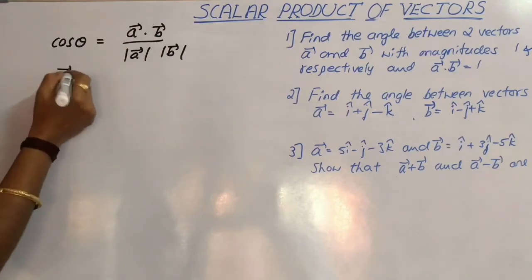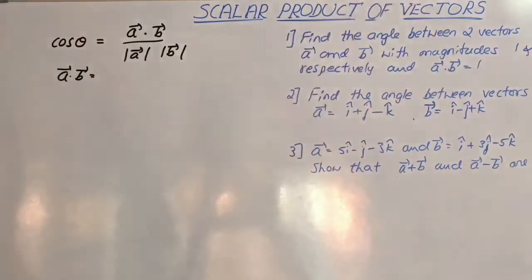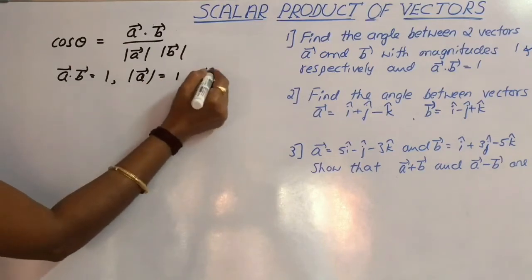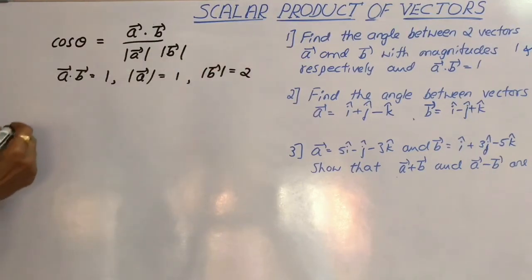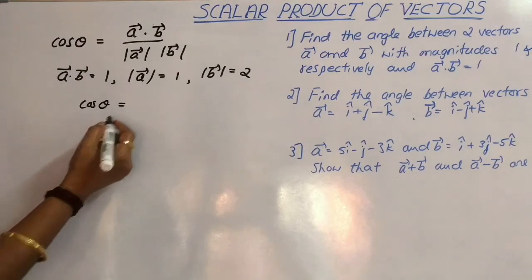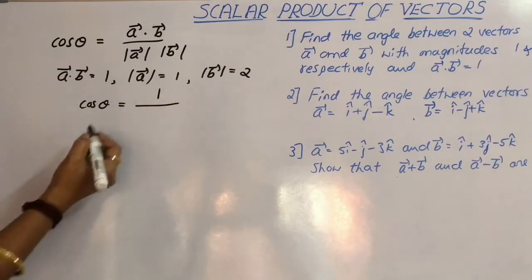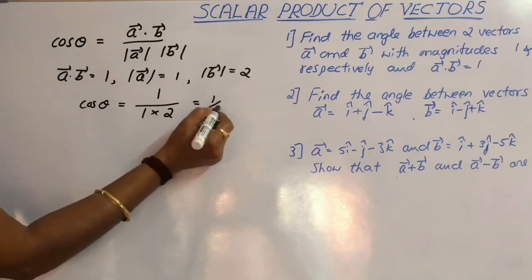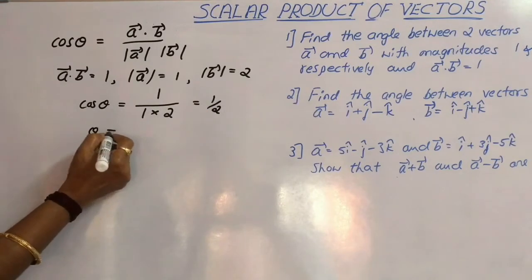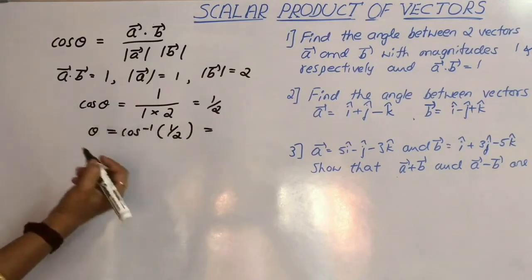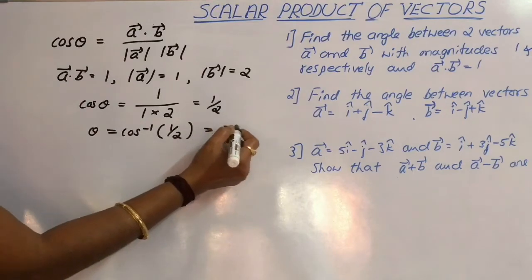We know the values: A dot B is given equal to 1, magnitude of vector A is equal to 1, and magnitude of vector B is equal to 2. Substituting these values, we get cos theta equal to 1 divided by 1 into 2. So we get cos theta equal to half, which means theta equals cos inverse of 1 by 2. Since cos 60 is half, therefore theta is equal to pi by 3.